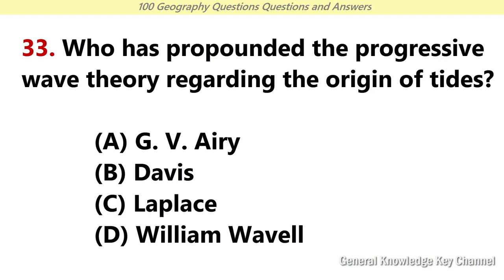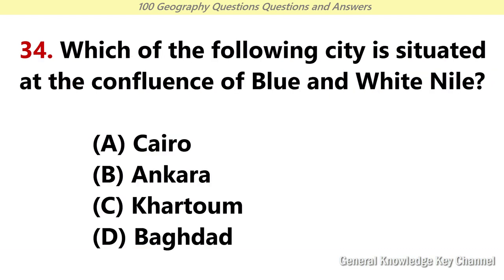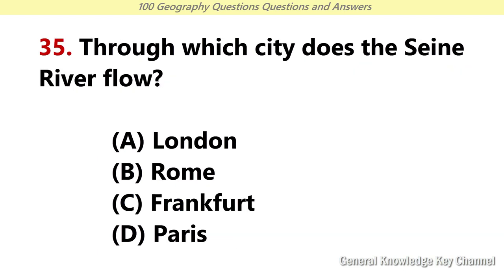Who has propounded the progressive wave theory regarding the origin of tides? Answer D: William Webel. Which of the following cities is situated at the confluence of Blue and White Nile? Answer C: Khartoum. Through which city does the Seine river flow? Answer D: Paris.